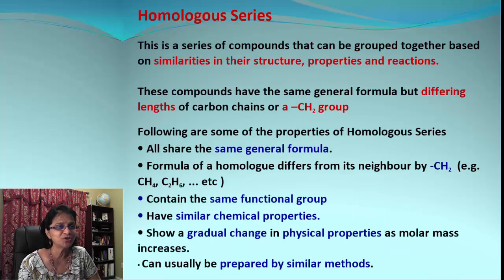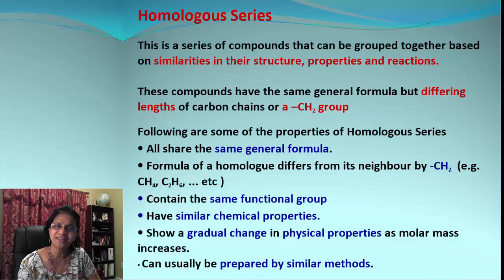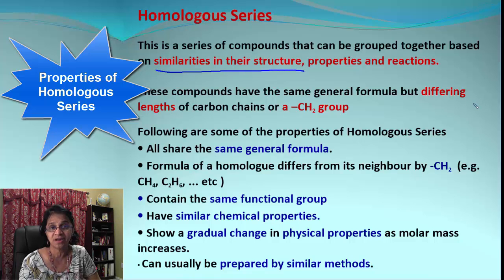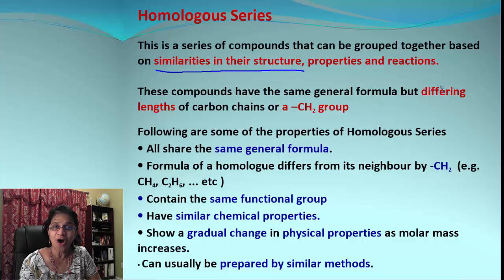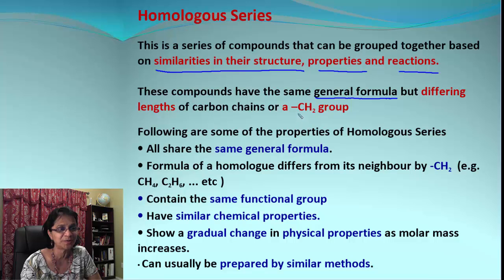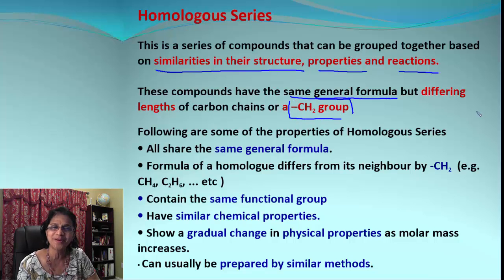What you just saw were examples of different homologous series. These are series of compounds based on the similarity of their structure — they may all have single bonds, at least one double bond, or be in ring form, and so on. They also show common properties and similar reactions. You will also notice that these compounds have a general formula, and they differ from the previous compound in the series by a CH₂ group.